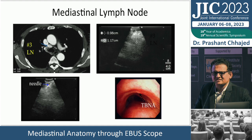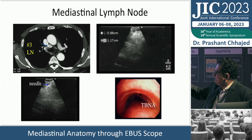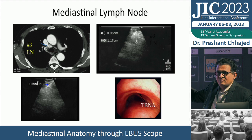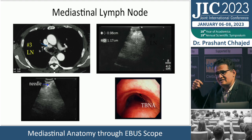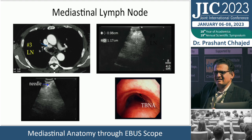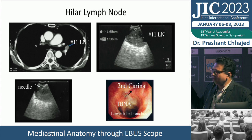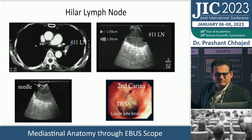These are early EBUS images from 20 years ago showing how lymph nodes were identified, how needles appeared, and questions about needle tracks and sinus formation. Now the needle track is used for cryobiopsy as well. You can perform EBUS, then insert a cryoprobe through the track to take larger samples — but this is only for selected cases. Hilar and mediastinal lymph nodes can now be routinely sampled. Transvascular EBUS is also possible but should not be your first case — sufficient experience is required.